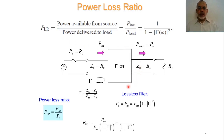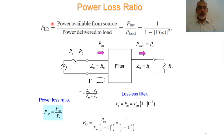Assuming the filter is a two-port network with a source and a load, we have incident power and load power. The ratio of the incident power to the load power is called the Power Loss Ratio (PLR). So the PLR is defined as the power available from the source to the power delivered to the load.